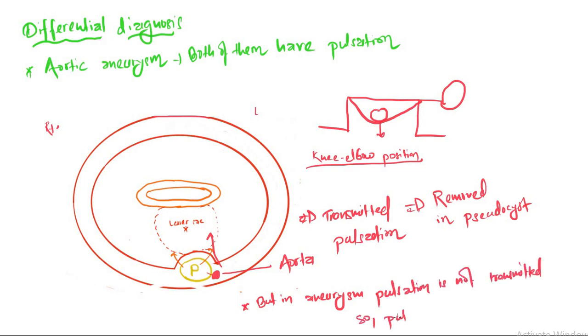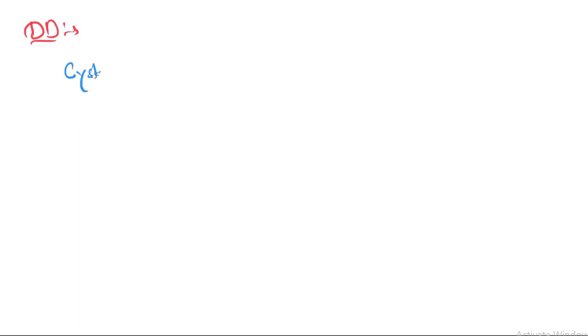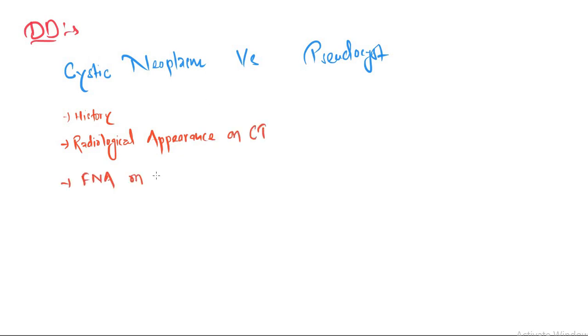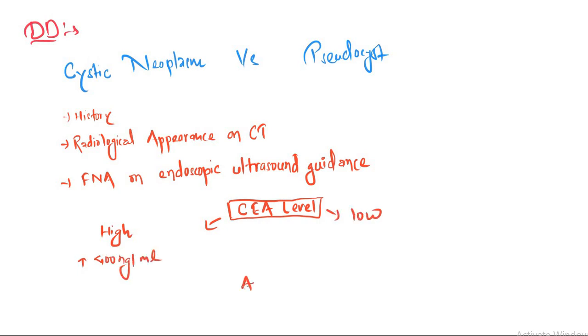Another differential diagnosis is cystic neoplasm, which is very important. By history, by radiological appearance on CT, and by performing fine needle aspiration on endoscopic ultrasound guidance, we can distinguish between them. We will check the CEA level after FNA. It's high in cystic neoplasm and low in pseudocyst.